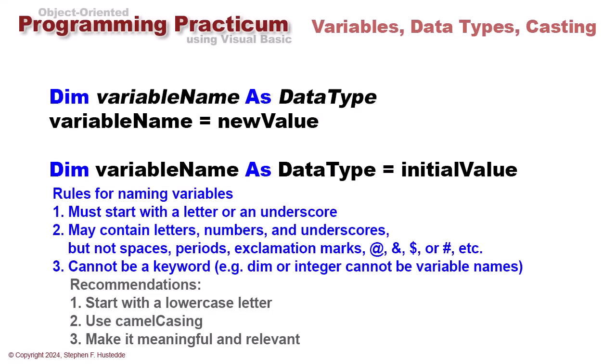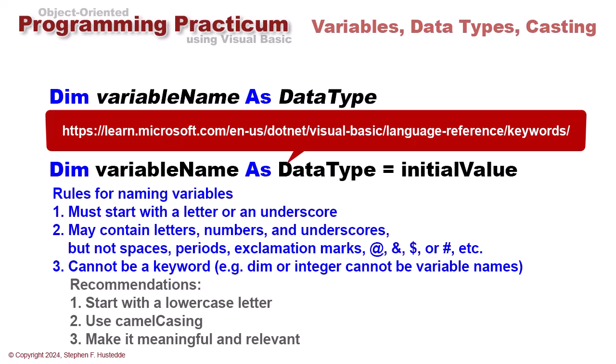The rules for naming variables are: they have to start with a letter or an underscore. They can contain numbers, so they may contain letters, numbers, and underscores, but no special characters, no spaces, no dollar signs, no hashtags. They cannot be a keyword. Anything you see in blue is a keyword in our Visual Basic code editor, so words like dim or integer cannot be variable names—those have very special meaning in Visual Basic.